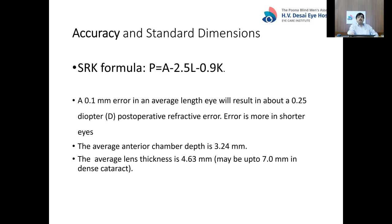For reference measurements, anterior chamber depth averages about 3 to 3.24 millimeters, and lens thickness can vary from 4 to 7 millimeters depending on how mature the cataract is.